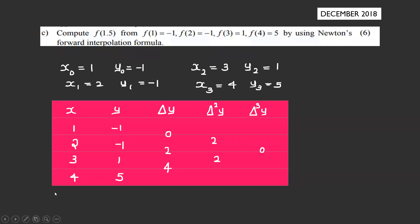This is a university question. Compute f(1.5) given: f(1) = -1, f(2) = -1, f(3) = 1, f(4) = 5, using Newton's forward interpolation formula.